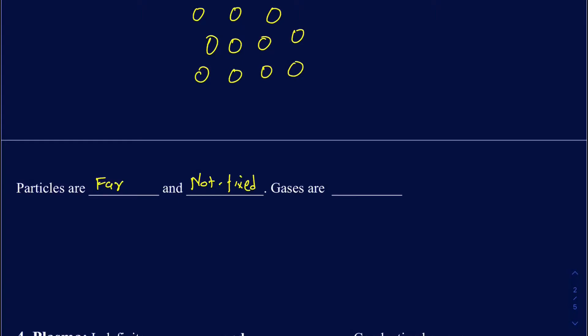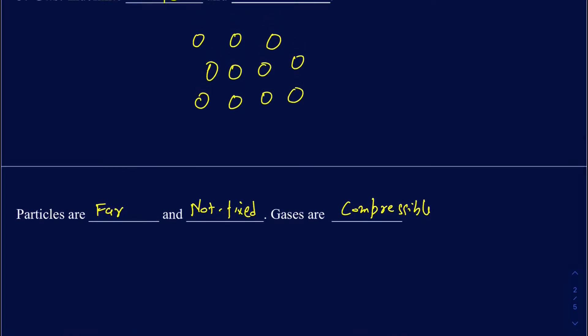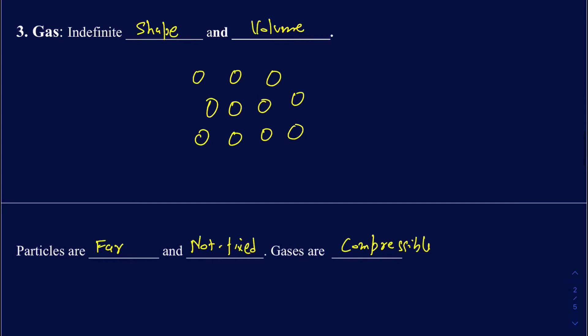Because you can change the volume of gases, that means you can compress them, so gases are highly compressible. You can apply pressure to decrease the volume, and if you release the pressure they will increase in volume. So those are the main three states of matter: solids have a well-defined shape and volume, liquids have a well-defined volume but no defined shape, and gases do not have a defined shape or volume.